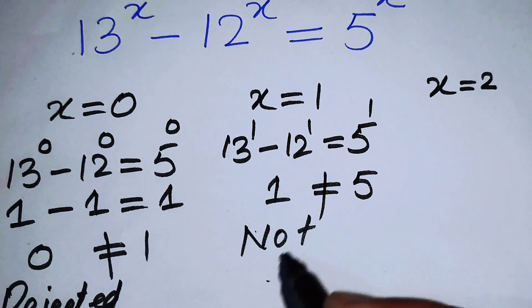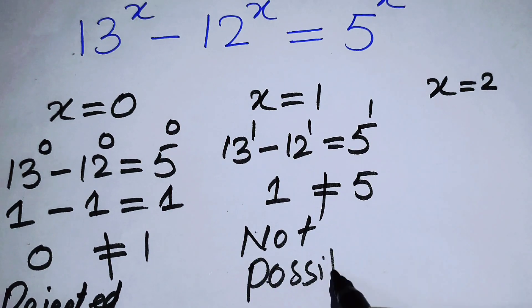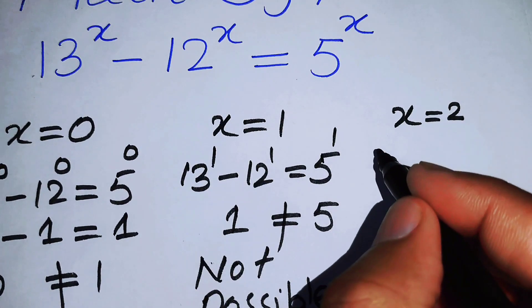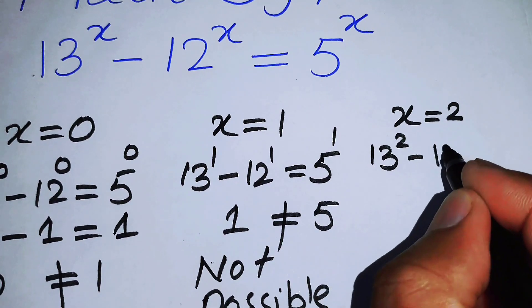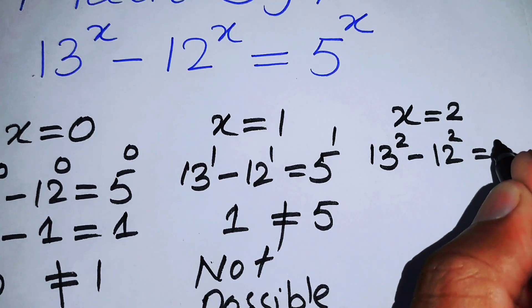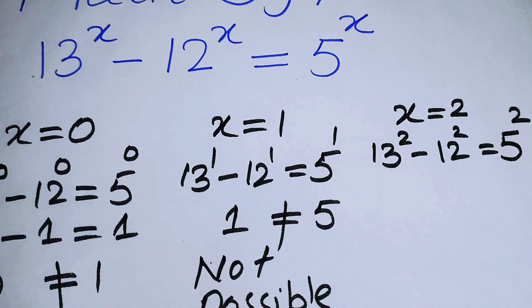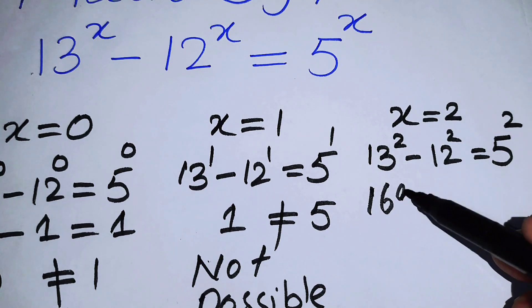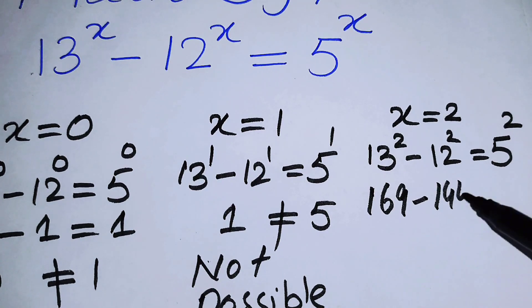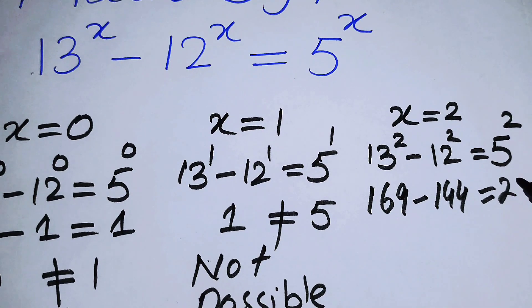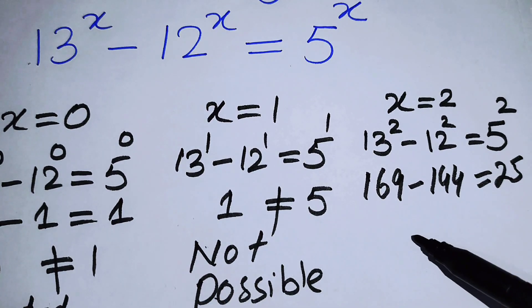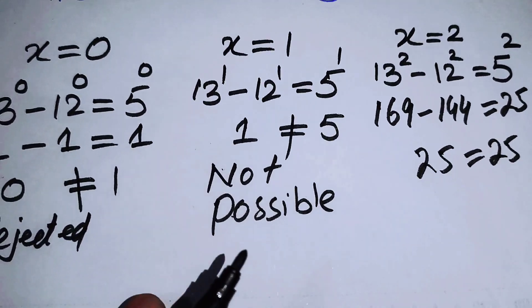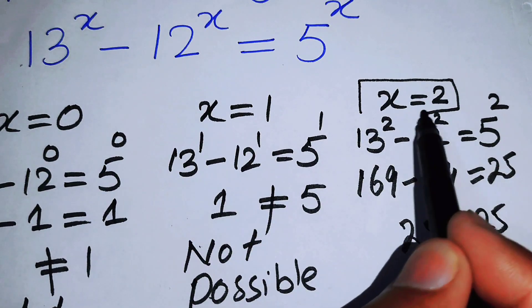We now put x equal to 2 in the equation, so it becomes 13 squared minus 12 squared equals 5 squared. 13 squared is 169, 12 squared is 144, and 5 squared is 25. So 169 minus 144 equals 25, which gives 25 equals 25. This is true!